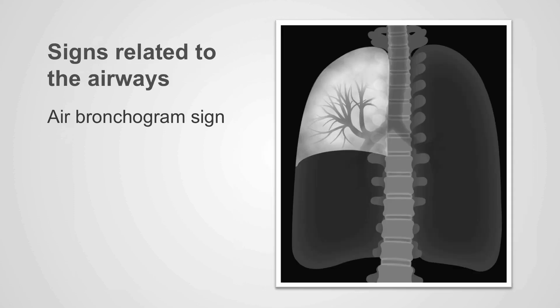Normally, the peripheral bronchi within the lungs are not identified past the lobar branches. However, if there is airspace disease — if there is fluid, water, blood, or tumor within the airspaces — the lungs will look white. If the airways are patent, we will identify the patent airways through the opacity of the abnormal lung.